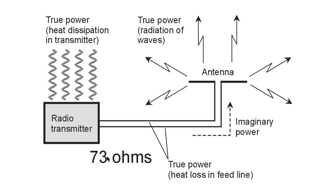73 ohms is what we want the ratio of the voltage in volts and the current in amperes to be. Remember Ohm's law: resistance equals voltage divided by current. If we have 73 volts and 1 ampere flowing everywhere along this line, then it will have a characteristic impedance of 73 ohms.